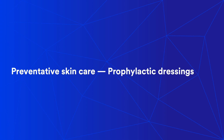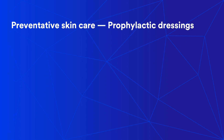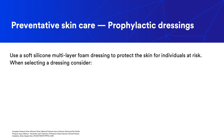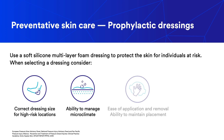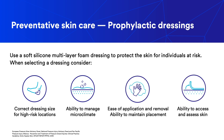Another component of a pressure injury prevention program includes the use of prophylactic dressings. Multi-layer silicone foam dressings have been found to protect individuals at risk of pressure injuries. When selecting a silicone foam dressing, consider appropriateness of size and shape, ability to manage microclimate, ease of application and ability to stay in place, and ability to access and assess skin. When implementing multi-layer foam in a prevention program, ensure that other interventions such as repositioning are maintained.